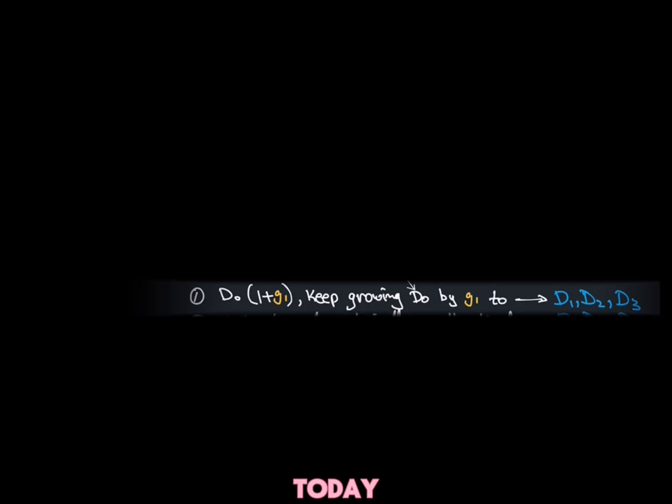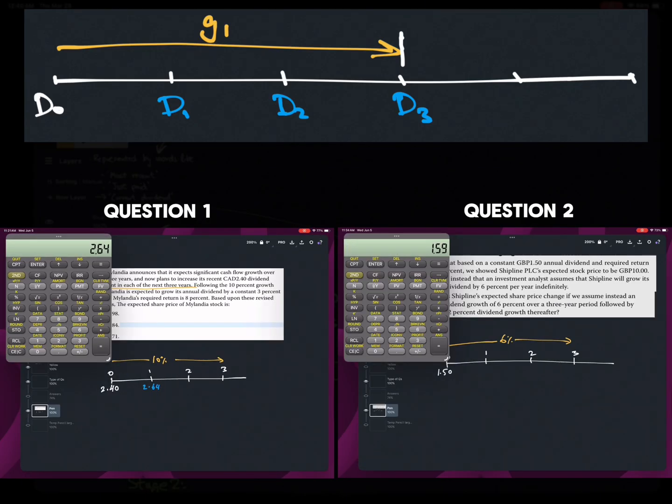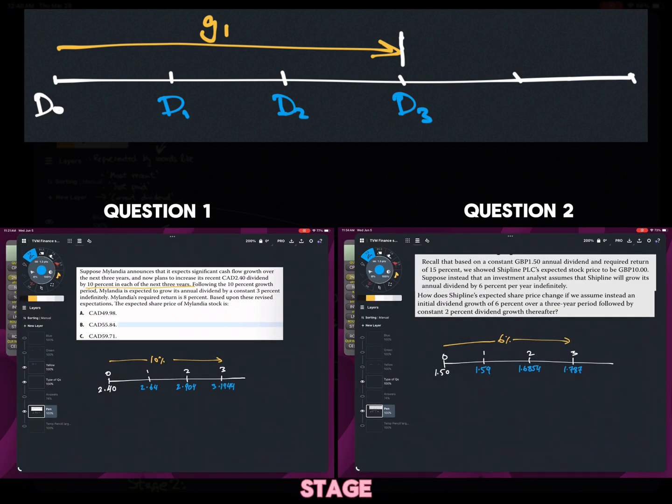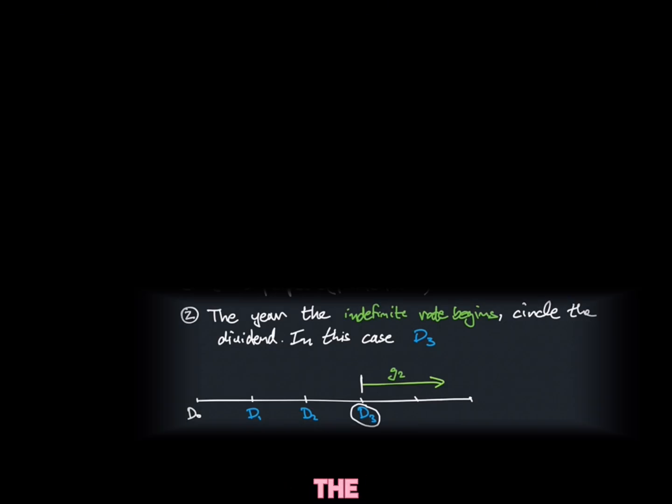Step 1 is to grow the dividend paid today by the Stage 1 growth rate. Stage 2 is where the perpetual growth rate will begin. Simply circle the dividend in the year the perpetual growth rate begins.